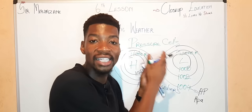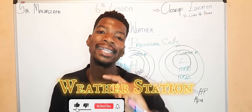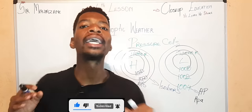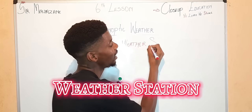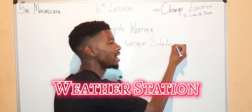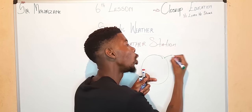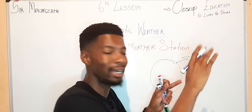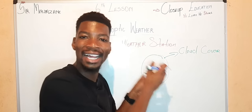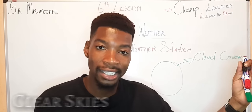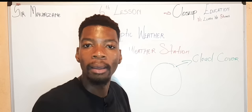We don't only use pressure cells to interpret synoptic weather map. We also use weather station model. And stay tuned, subscribe to continue the lesson. We are back to understand what we call the weather station model. The weather station model consists of a circle-like shape that will interpret what we call the cloud cover of that particular area. So this circle tells us is that place clear? Does it have clear skies or is it overcast? Whereby every single part of the circle has a black marking.